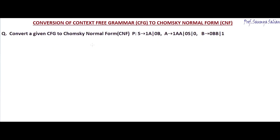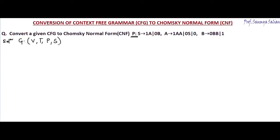So now let's solve an example question. Given a context-free grammar, we have to convert it into Chomsky's normal form. The grammar is defined by 4-tuples: V, T, P, and S.